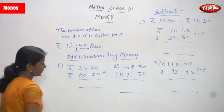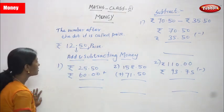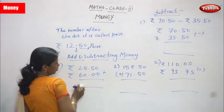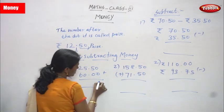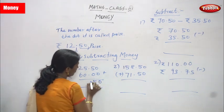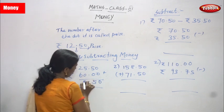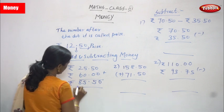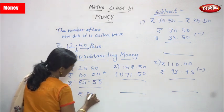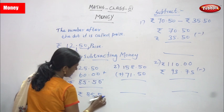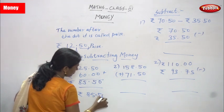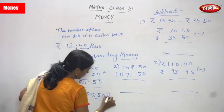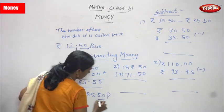Now, adding and subtracting money. First question: 25 rupees 50 paise plus 60 rupees. We have to add together — general addition only. 0 plus 0 is 0, 5 plus 0 is 5, then the dot, 5 plus 0 is 5, and 6 plus 2 is 7 — wait, 8. So the answer is 85 rupees 50 paise.